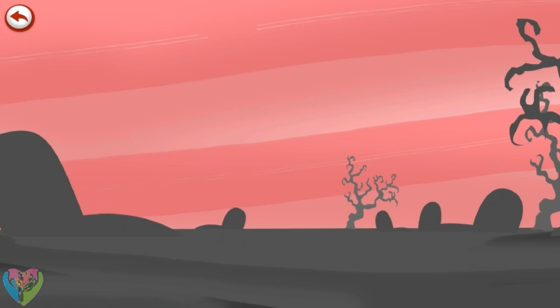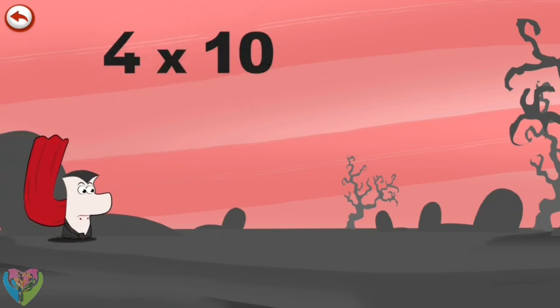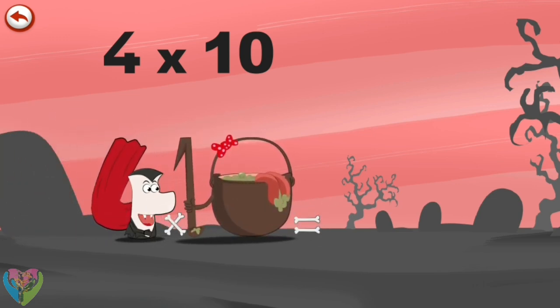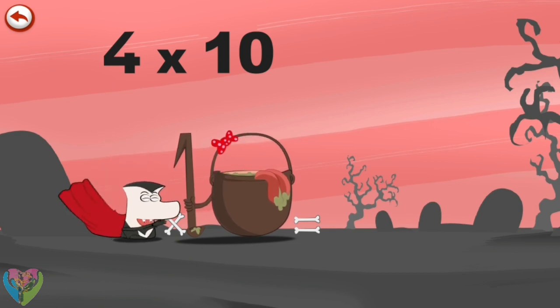What's the story of 4 times 10? When Vamp4 meets the potion Magi-10, it makes him very, very hungry. He dives headfirst into the cauldron.